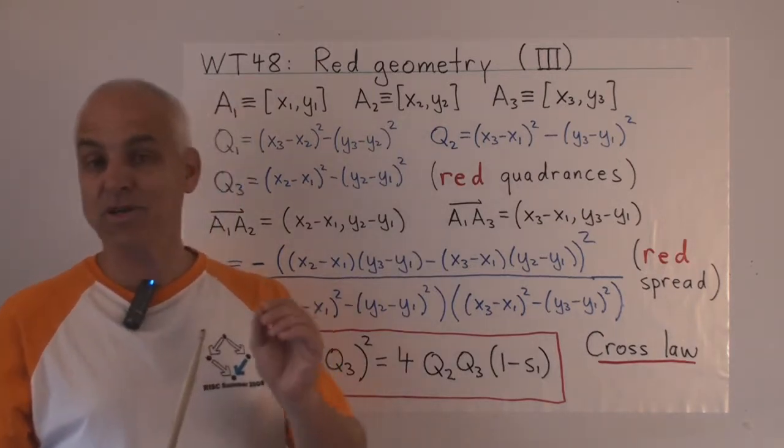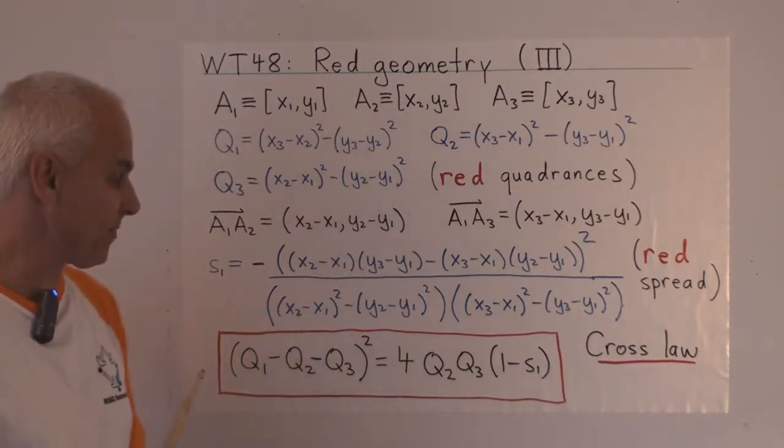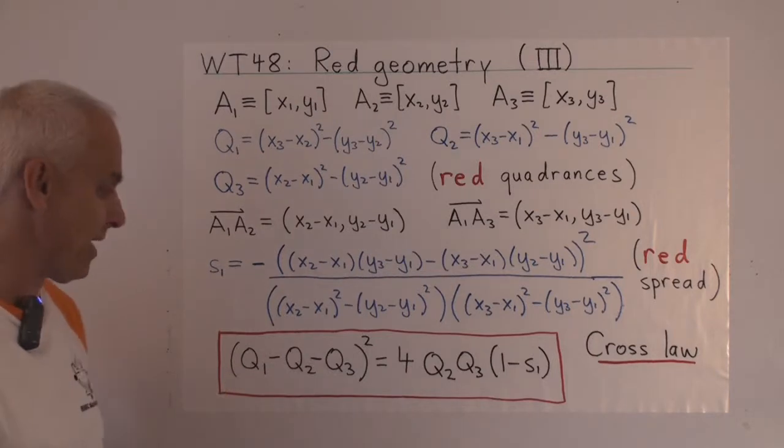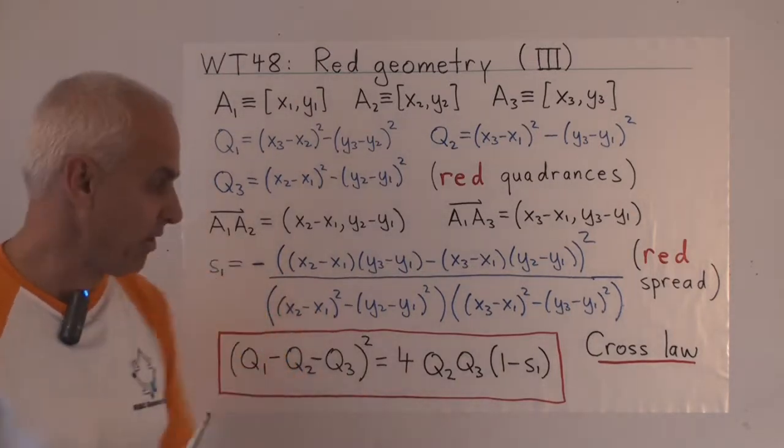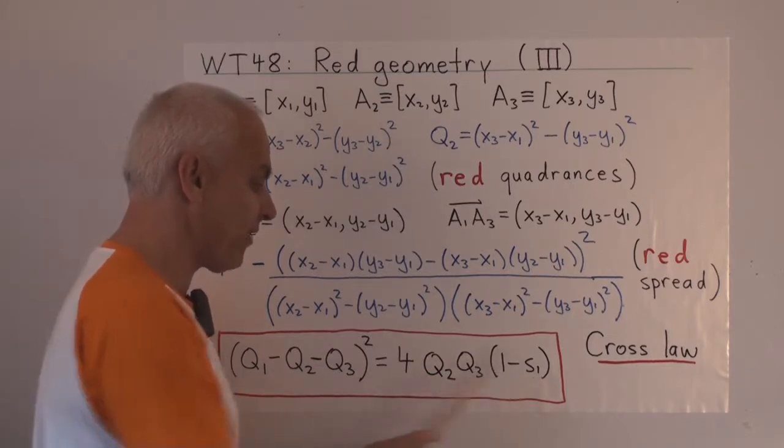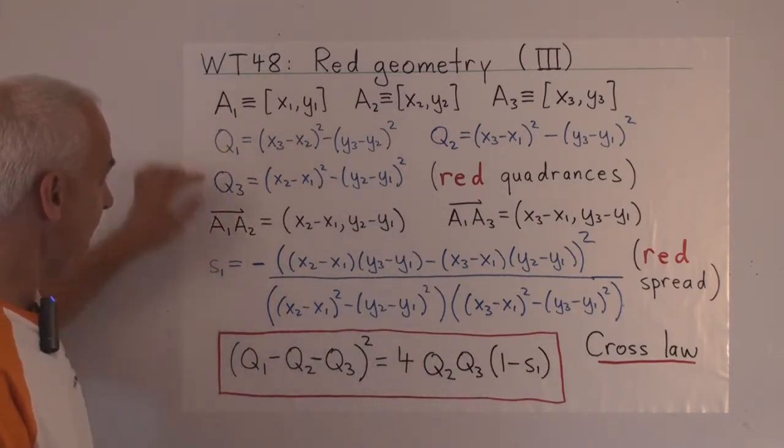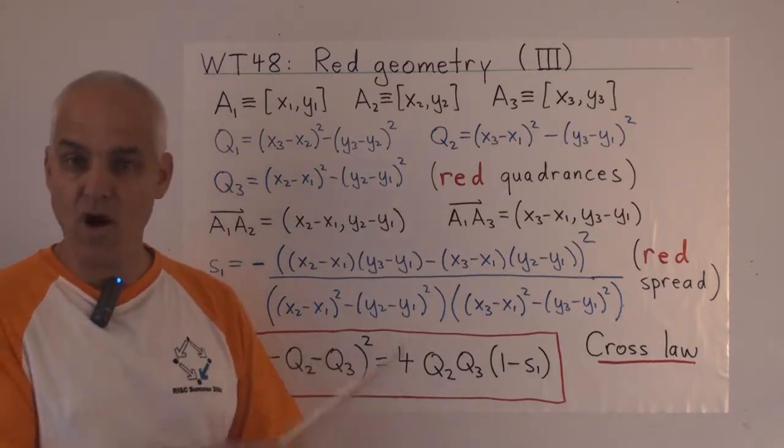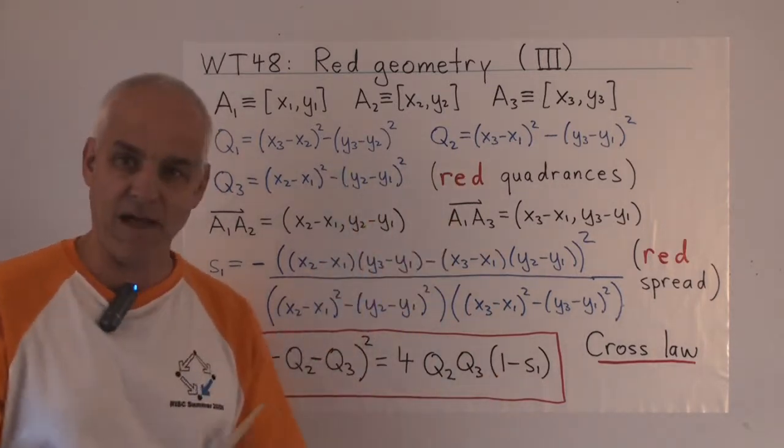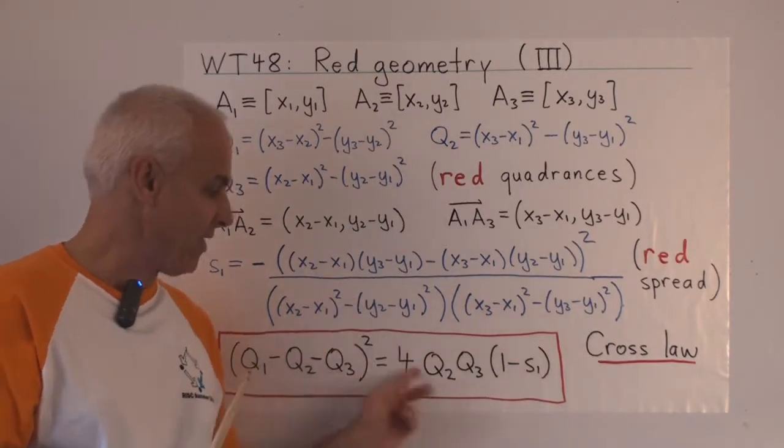And our key for establishing the main laws of trigonometry is to establish the most important one, the cross law, which is the relation between the three quadrances and one of the spreads. We'll choose S1. And here's the cross law. And it's exactly the same as the cross law that I hope you are very familiar with. Q1 minus Q2 minus Q3 all squared equals 4 times Q2 times Q3 times 1 minus S1. And I'm claiming that this is an identity that follows directly from the definition of S1 and the definition of these three quadrances. In other words, you could go off now and just crank out and check that the left-hand side equals the right-hand side when we substitute these three values for these four values. But let's ourselves go through now and check why this is exactly the case.